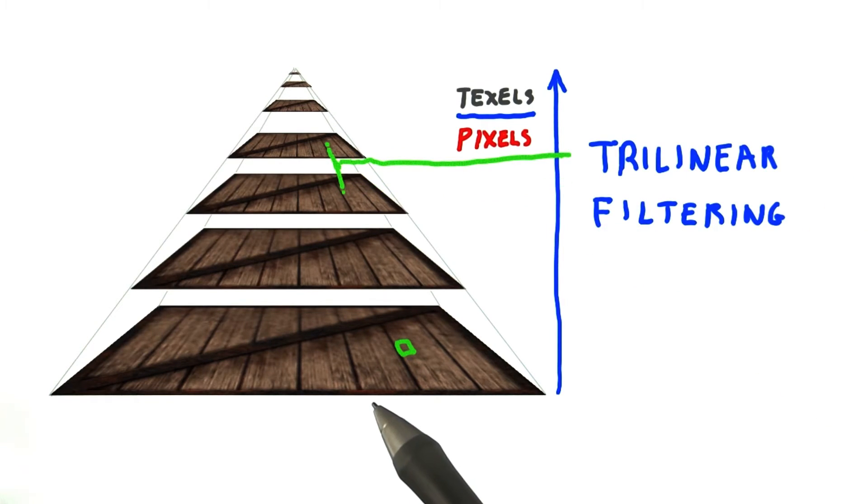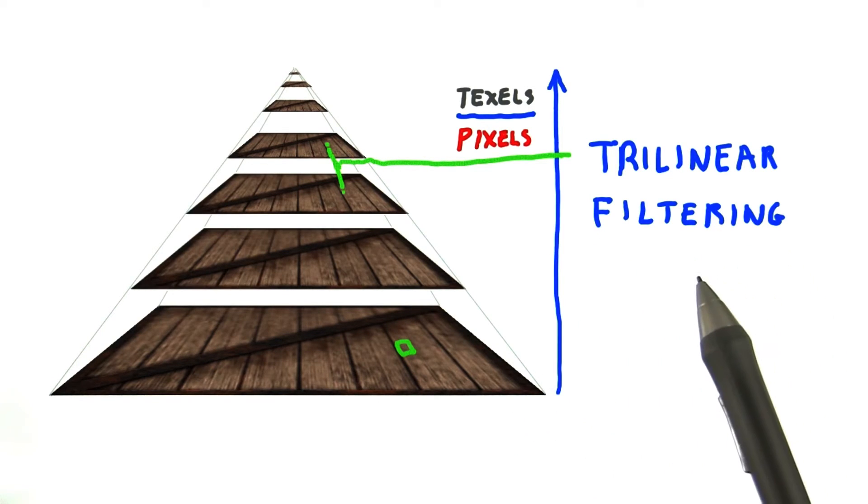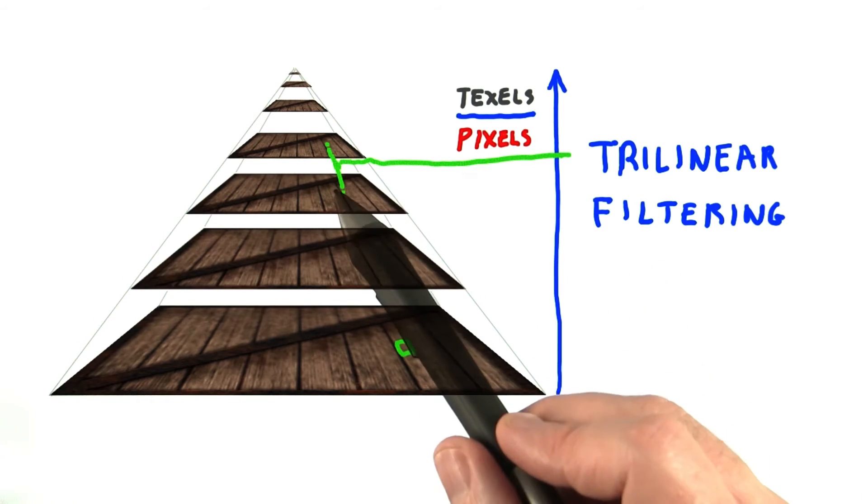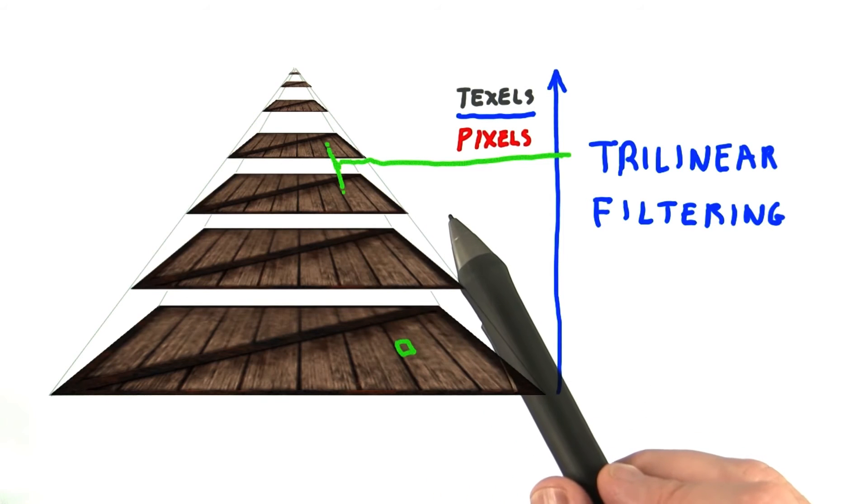In fact, for even better quality rendering, we can set the GPU to linearly interpolate between levels. This is called trilinear filtering. Say our ratio is in between two pyramid levels. We then sample the texture above and below from where our sample is in the pyramid and interpolate between these two samples.